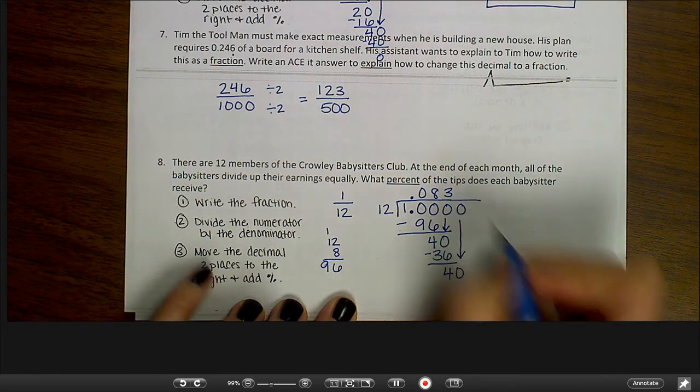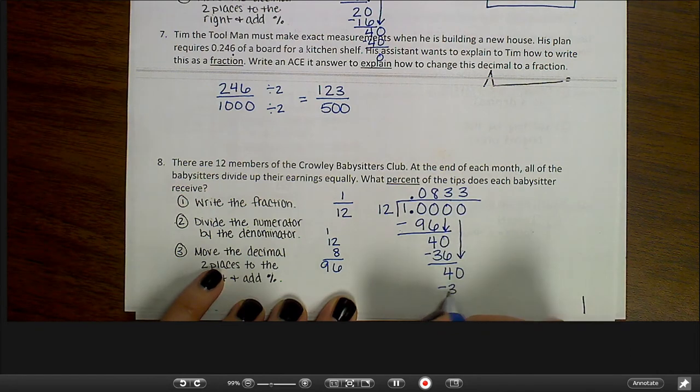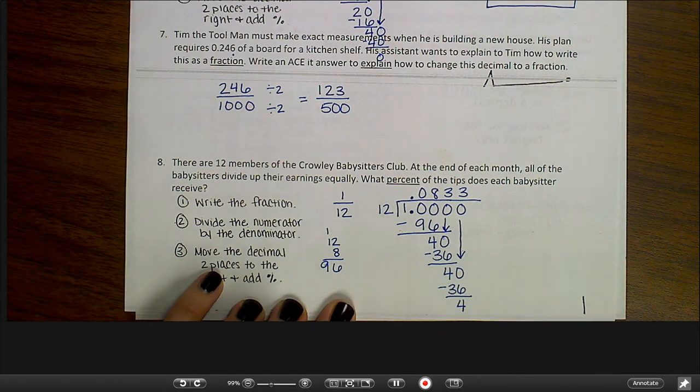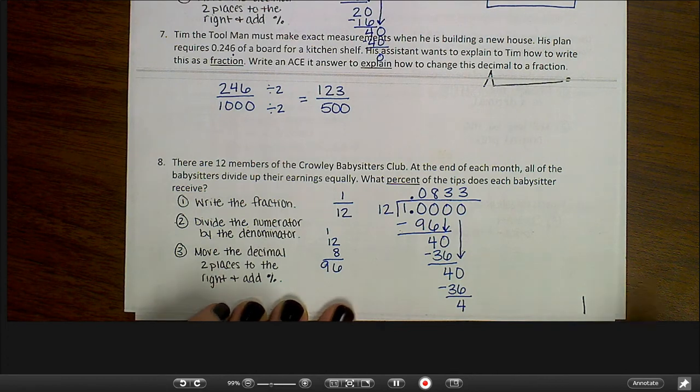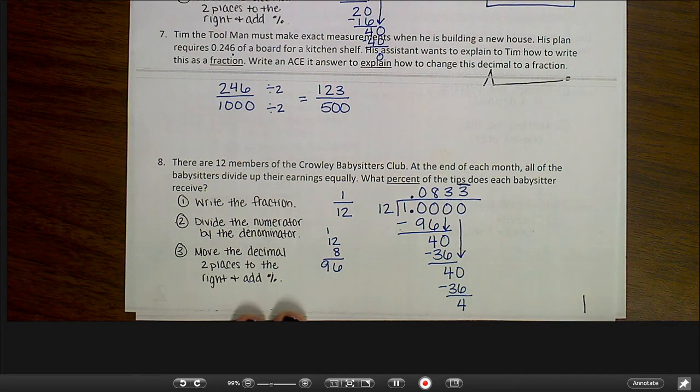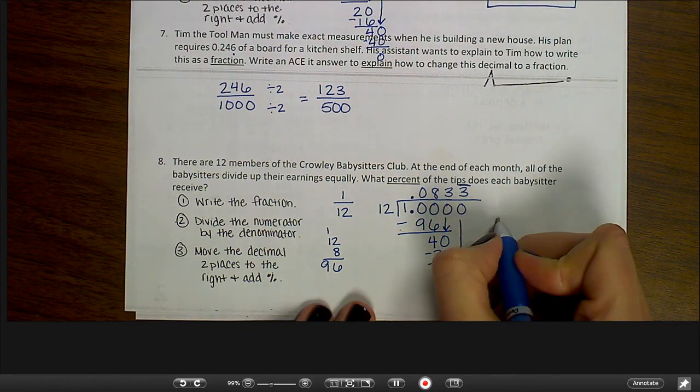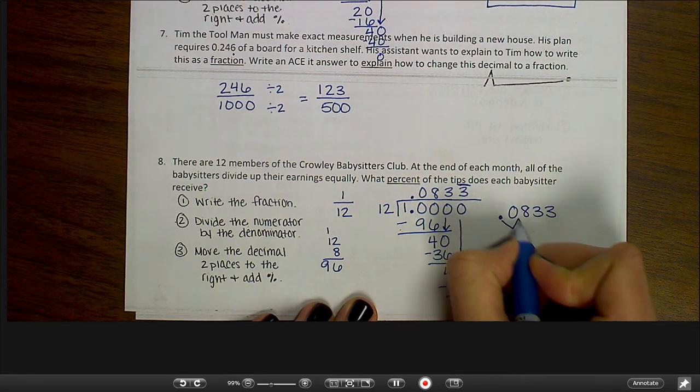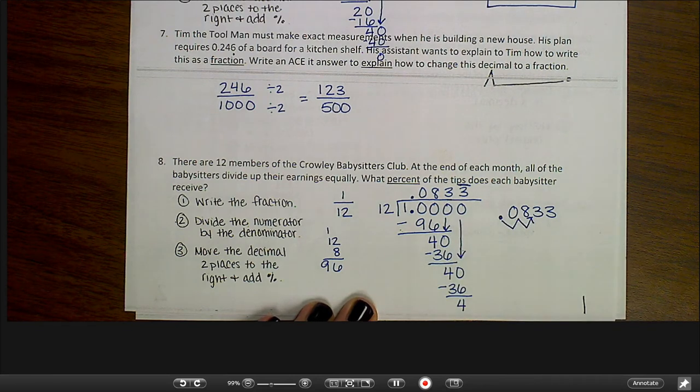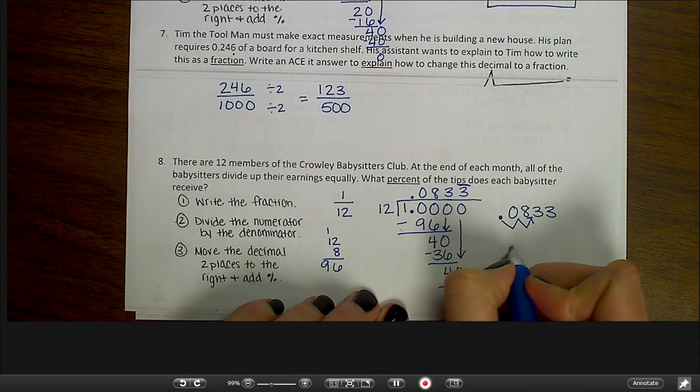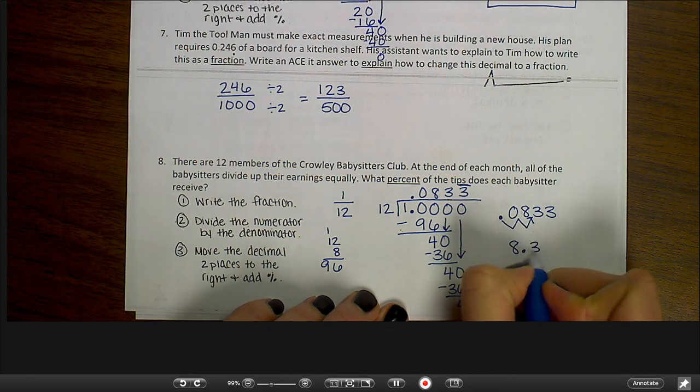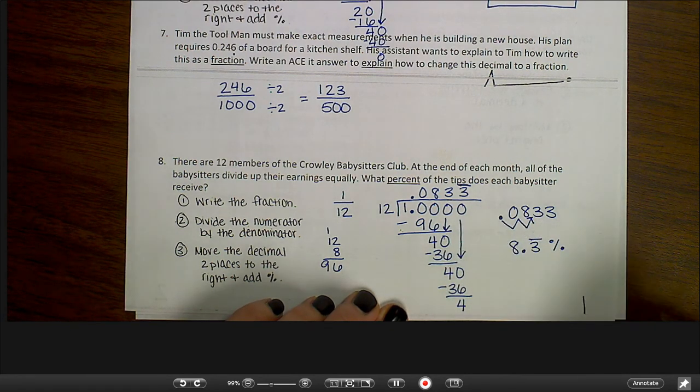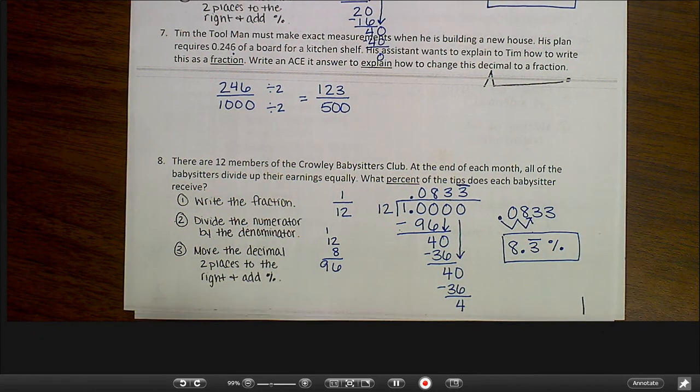Twelve goes into forty three times. Three times twelve is thirty-six. And I subtract and get four. It looks like I may have a repeating decimal, but first I'm going to check. So bring down another zero. Twelve goes into forty three times. Three times twelve is thirty-six. I get four when I subtract. So yes, I do have a repeating decimal. So, my repeating sign goes over the three. And step three says to move the decimal point two places to the right and add a percent sign. So I'm going to move one, two places to the right, and I'm going to add a percent sign. Don't forget that repeating bar over the three. So each babysitter gets about eight point three percent.